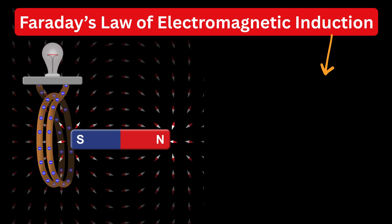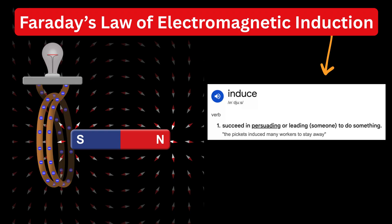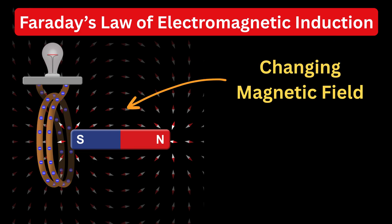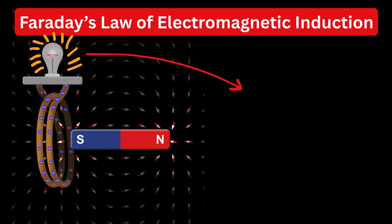Now, the meaning of the term induce is to succeed in persuading or leading someone to do something. The changing magnetic field persuades or leads the wire to produce electricity, even though no battery is connected. That's why the current and voltage that appear are called induced current and induced voltage.